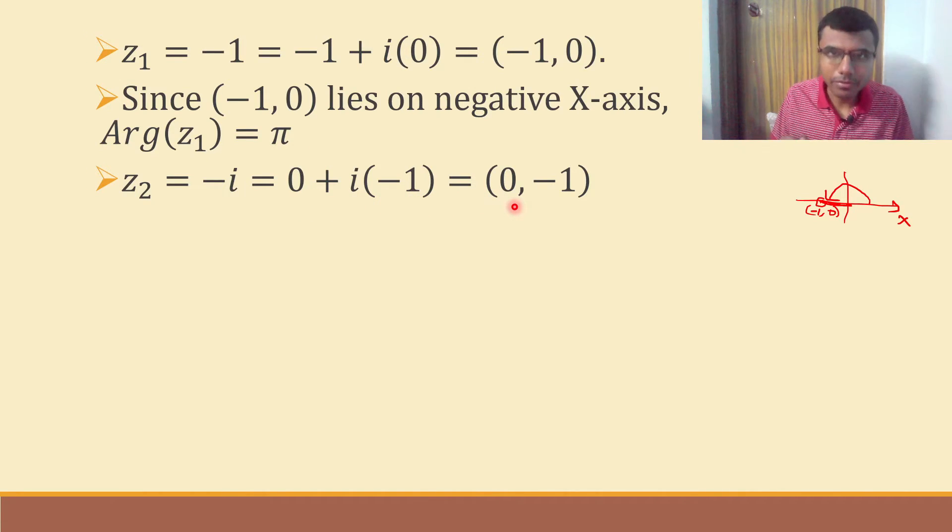Now let us plot this on the graph to find out its argument. See, 0 comma minus 1 will be somewhere here. Now how much is this making with the positive direction of x-axis? I could measure the angle in two ways, either in anti-clockwise or in clockwise, but I'm going to measure in clockwise. It is 90 degrees. Since I measured in clockwise it is minus 90 degrees.